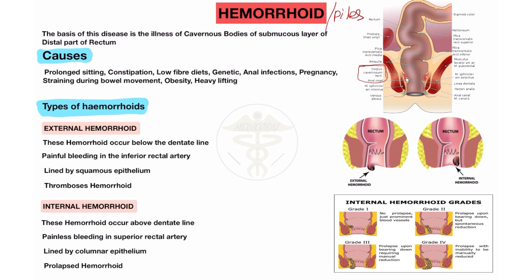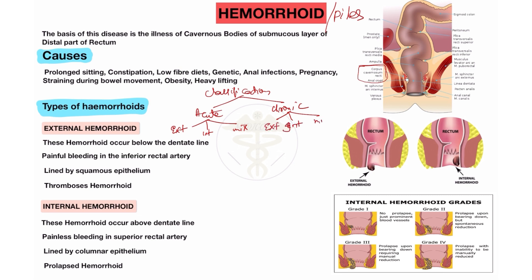There are mostly two types of hemorrhoids. The classification of hemorrhoids: first is the acute type and second is the chronic type. Acute is divided into external hemorrhoid, internal hemorrhoid, and mixed type. Chronic is also similarly divided into external, internal, and mixed type of hemorrhoid.